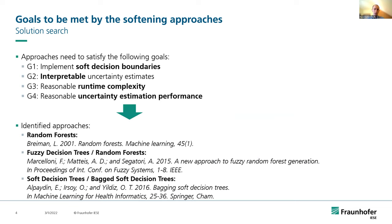To address this problem, we identified suitable alternative approaches to decision trees. We defined three goals: first, the approach should mitigate hard decision boundaries to soften the uncertainty estimates; second, the approach should allow for interpretable uncertainty estimates comparable to decision trees; third, the runtime complexity should not increase excessively. We additionally set a fourth goal to ensure that the performance of uncertainty estimates would not decrease significantly compared to decision trees, assessed by later evaluation. In total, we selected five approaches: random forests, two fuzzy approaches, and two soft decision tree approaches.